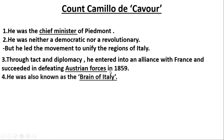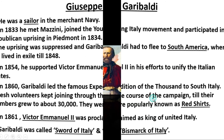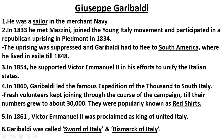Austria was defeated as a result of the alliance with France in 1859, leading to the gradual unification of several Italian states including Sardinia and Piedmont. Garibaldi joined the navy in 1833 and became involved in the Young Italy movement in 1834, though he faced setbacks and eventually went to South America.